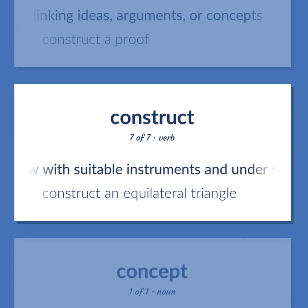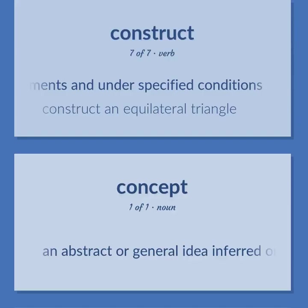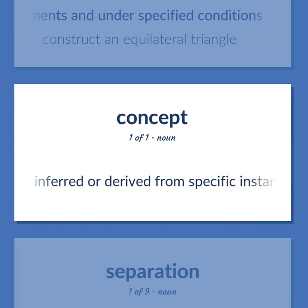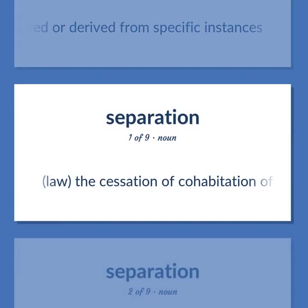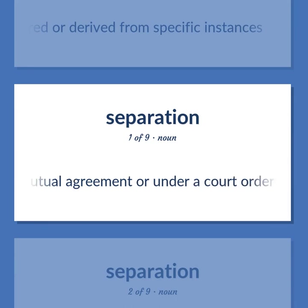Draw with suitable instruments and under specified conditions — construct an equilateral triangle. An abstract or general idea inferred or derived from specific instances. Law: The cessation of cohabitation of man and wife, either by mutual agreement or under a court order.